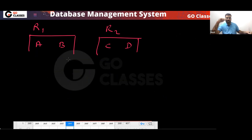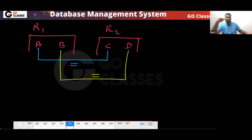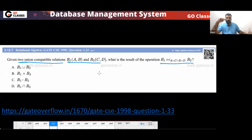Now the question says A should be equal to C and B should be equal to D. So what are you going to get when you apply this join condition?